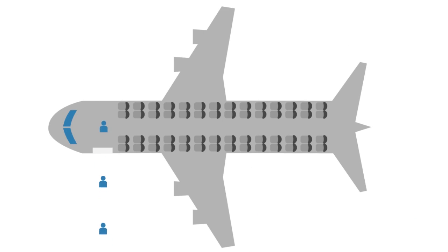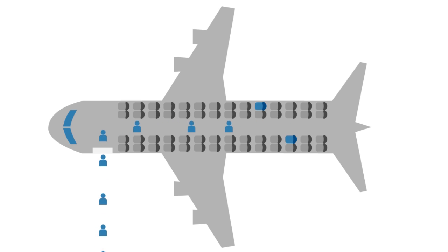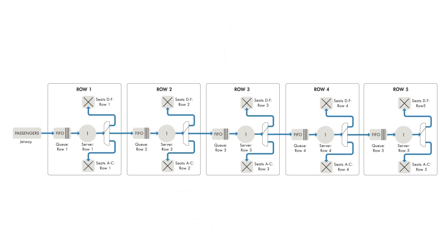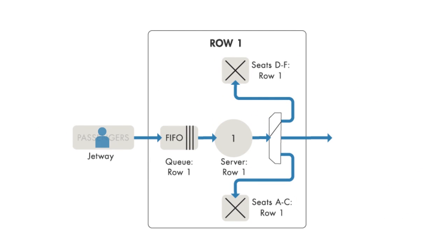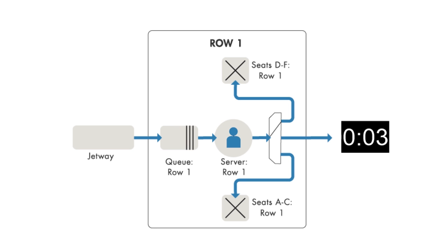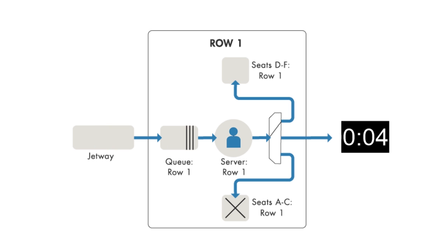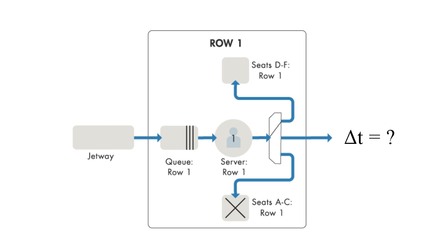To illustrate this concept, consider a discrete event simulation of passengers boarding an aircraft. One way to achieve this is to model the aisle as a series of queues and servers that entities — in this case the passengers — move through until they reach their assigned seat. When they reach the correct row, passengers stow their carry-ons in the overhead bin before working their way into their seat. So all you have to do is define the time necessary for each passenger to complete these tasks in order to simulate how long it takes for the plane to complete the boarding.